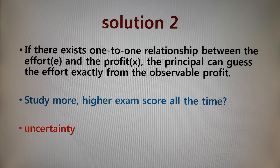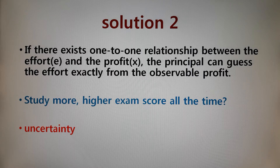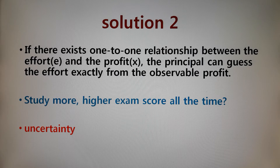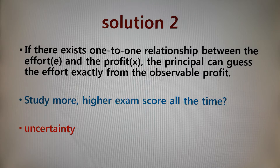For example, Professor Han is teaching a class, working very hard, preparing so hard. However, somehow only 20 students take his course. On the other hand, right now Professor Han is not trying very hard, but 350 students are taking his course. Professor Han's salary — in an ideal world — should depend on how hard he prepared the class, not how many students are taking his course.